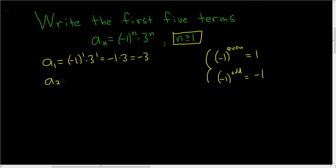Okay, a sub 2, we get negative 1 squared times 3 squared. Negative 1 squared is 1, so we get 1 times 9 which is 9, right? Because 2 is even and negative 1 to an even number is equal to 1.